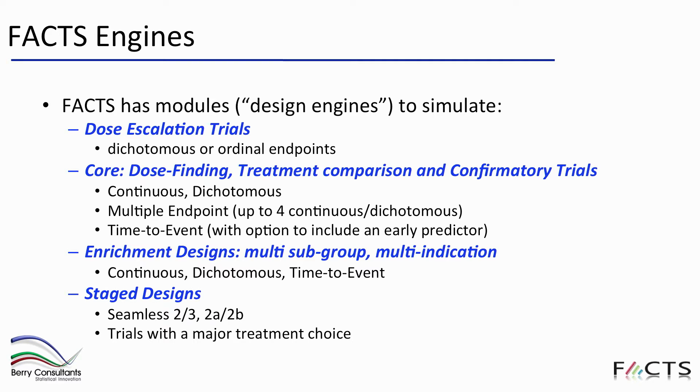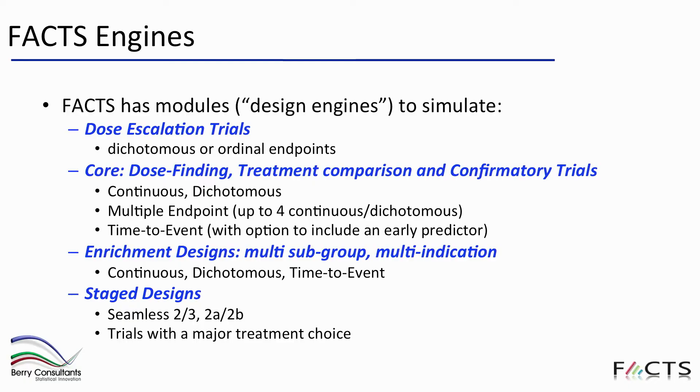Then we have the enrichment designs, where your trial contains multiple subgroups or multiple indications and you're testing a single treatment across those different types, with continuous, dichotomous, and time-to-event versions. And lastly, there are what we call stage designs, which allows you to simulate a FACTS Core type design — testing multiple arms — followed by a subsequent design, so typically a phase two followed by a phase three, including the option to combine them in a seamless study with a pre-specified transition from one stage to the other.